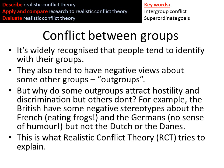The theory recognises that people identify with their in-group and accepts the idea of having an in-group and an out-group, with negative views about the out-group. But why do some out-groups attract hostility and discrimination while others don't? For example, the British have negative stereotypes about the French and Germans, but not about the Dutch or the Danes. This is what Realistic Conflict Theory tries to explain.